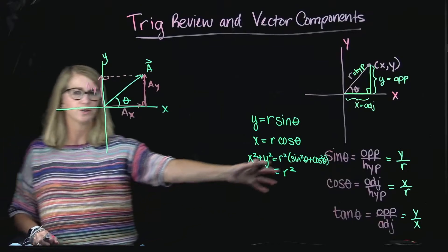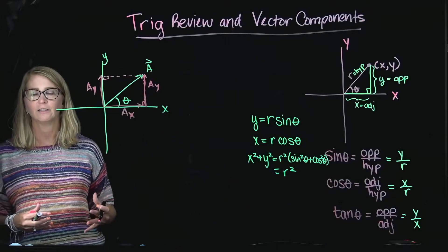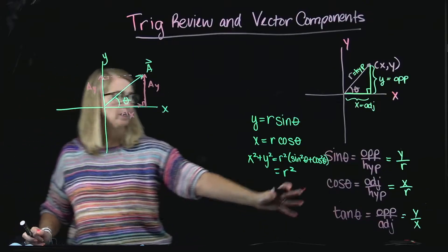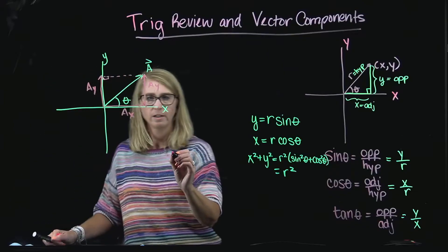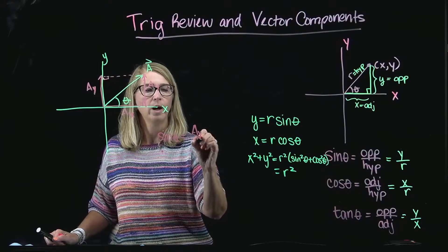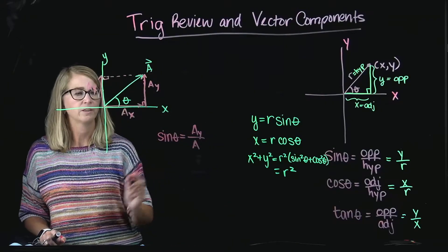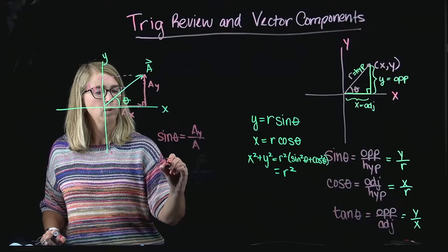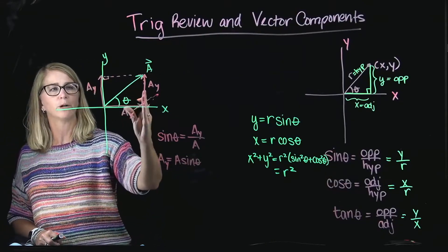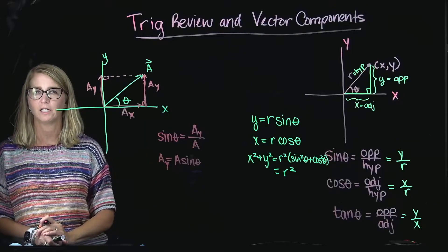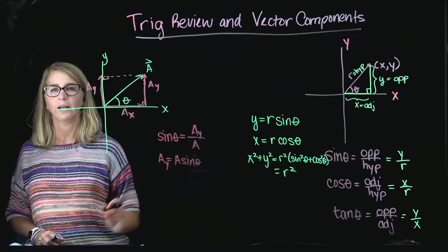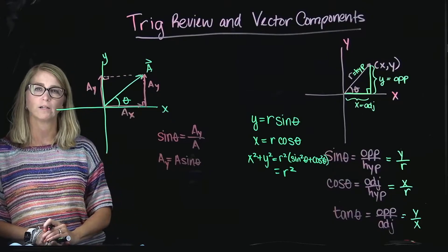And so, we're going to use these trig functions to be able to calculate the components of A. For instance, we know that the sine of theta is equal to AY over A. That means that AY is equal to A sine theta. The reason that that works is because the Y component of A is opposite the angle theta. And so, I was thinking of opposite over hypotenuse, AY over A. Rearranging it, I can calculate the Y component of vector A.